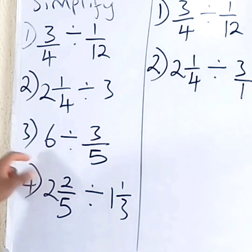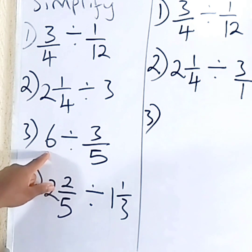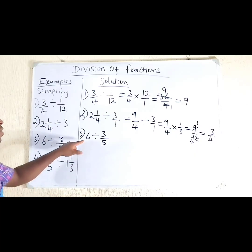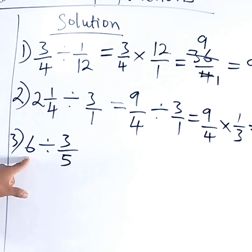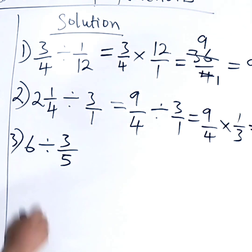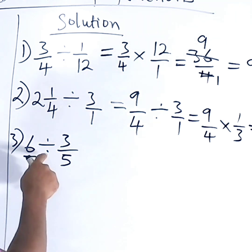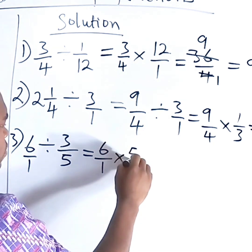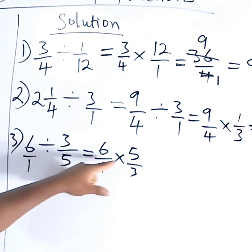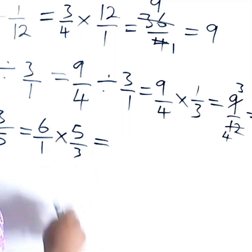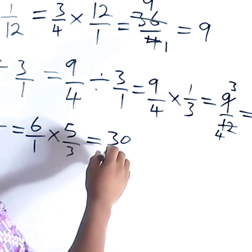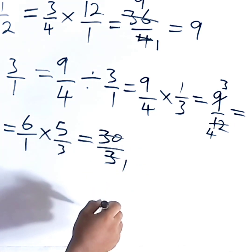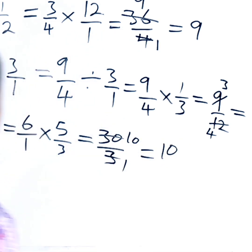Number 3: we have 6 whole number divided by 3 over 5. First of all, we need to make 6 look like a fraction by placing it over 1. So we have 6 over 1. We change the division to multiplication and invert the fraction. So, 6 times 5 is 30, and 1 times 3 is 3. Then, 3 divides itself to give 1, and 3 divides 30 to give 10. So the answer is 10.